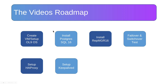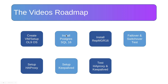Then we will set up Keepalived. Keepalived performs a health check for HAProxy, and in case of any failure it will promote a new node to be the master. Keepalived also provides a virtual IP so we can use this virtual IP in applications for seamless failover between the nodes. Then we will test HAProxy and Keepalived and make sure those configurations are done properly on the system.